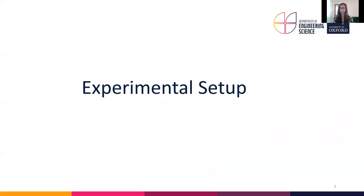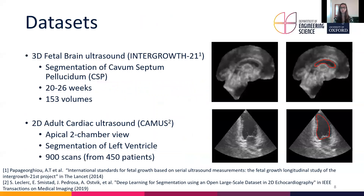What is our experimental setup? We have two datasets available. The first is a 3D fetal brain ultrasound dataset from the Intergrowth-21st study. In these images we segment the cavum septi pellucidi (CSP), which is a fluid-filled cavity present only in the fetal period. We use scans from gestational ages of 20 to 26 weeks, with a total of 153 volumes.